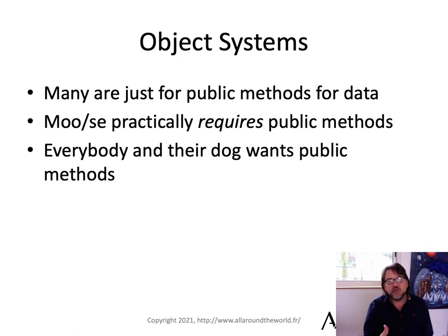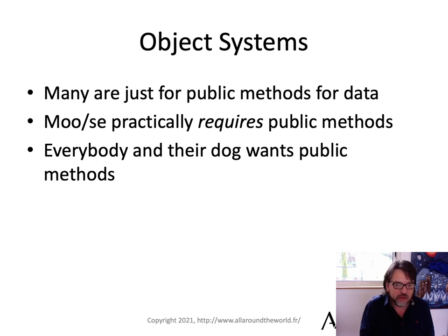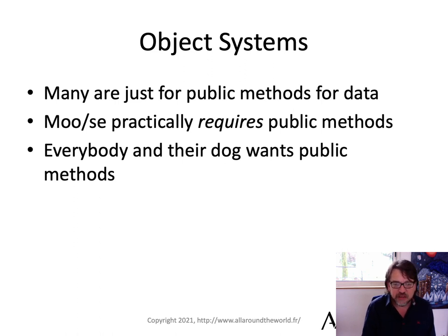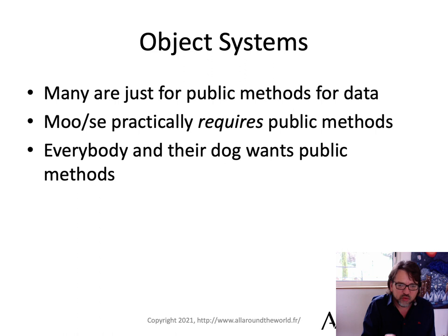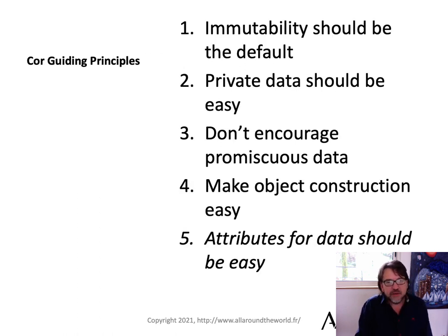Object systems for Perl quite often are just public interfaces for grabbing data — all the data. Moose practically requires public methods, and you don't want that. You want to be able to hide data away and only expose it as needed. If you want to expose your data, just add a colon reader after your attribute — done, that simple. Attributes for data should be easy in Cor.